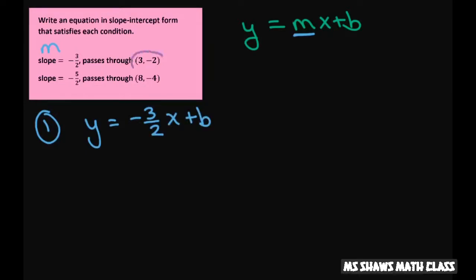Second step, plug in your x and y to solve for b. So y is negative 2 and x is 3.